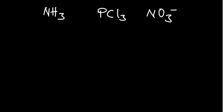So in the first example, NH3, we know that hydrogen can never be a central atom because it forms a maximum of a single bond. So in this case, nitrogen is going to be our central atom.